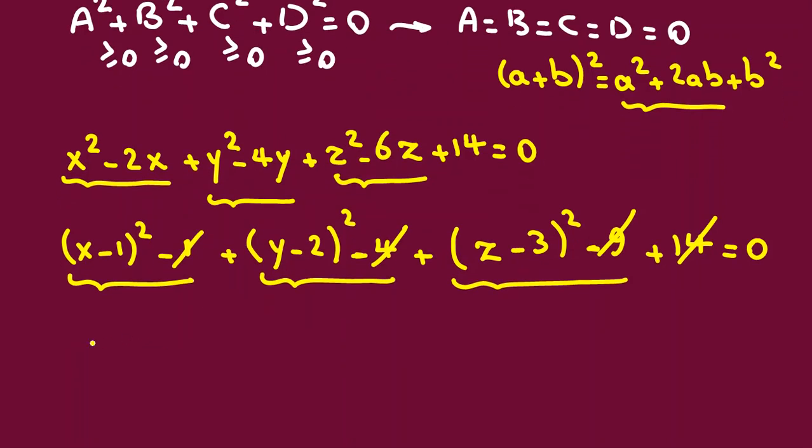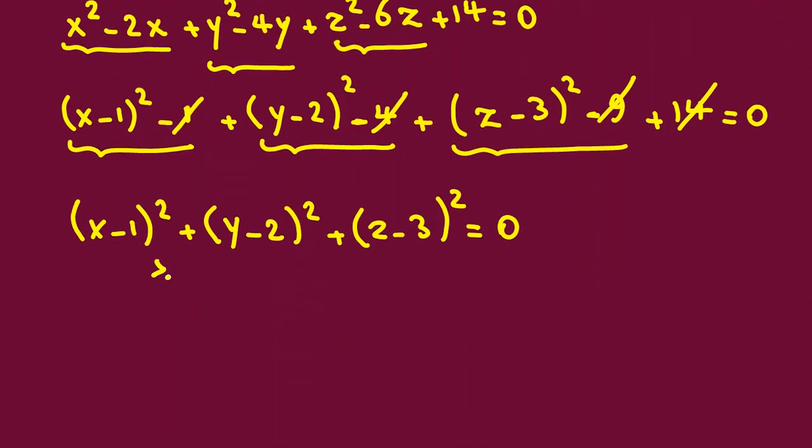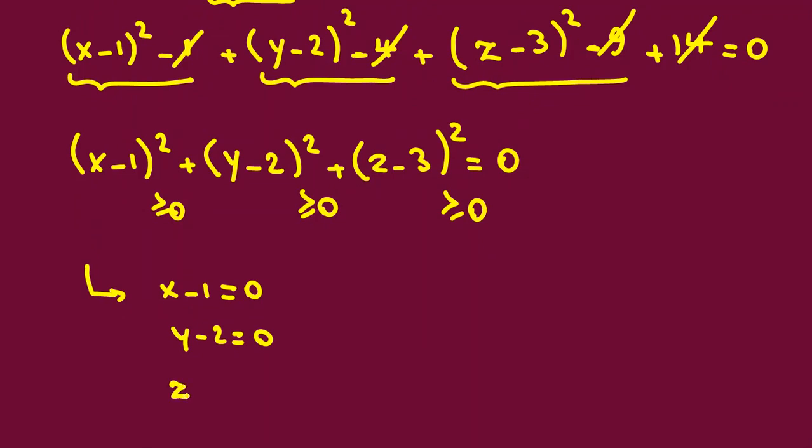Now, we've reached the thing that we wanted. x minus 1 squared, plus y minus 2 squared, plus z minus 3 squared, equal to 0. Because each of them are perfect squared, each part is greater than equal to 0. What can we conclude? Each of them should be 0. So, x minus 1 should be 0, y minus 2 should be 0, and z minus 3 should be 0. From first one, we conclude x equal to 1. From second one, we conclude y equal to 2. From third one, we conclude z equal to 3. We've solved this problem.